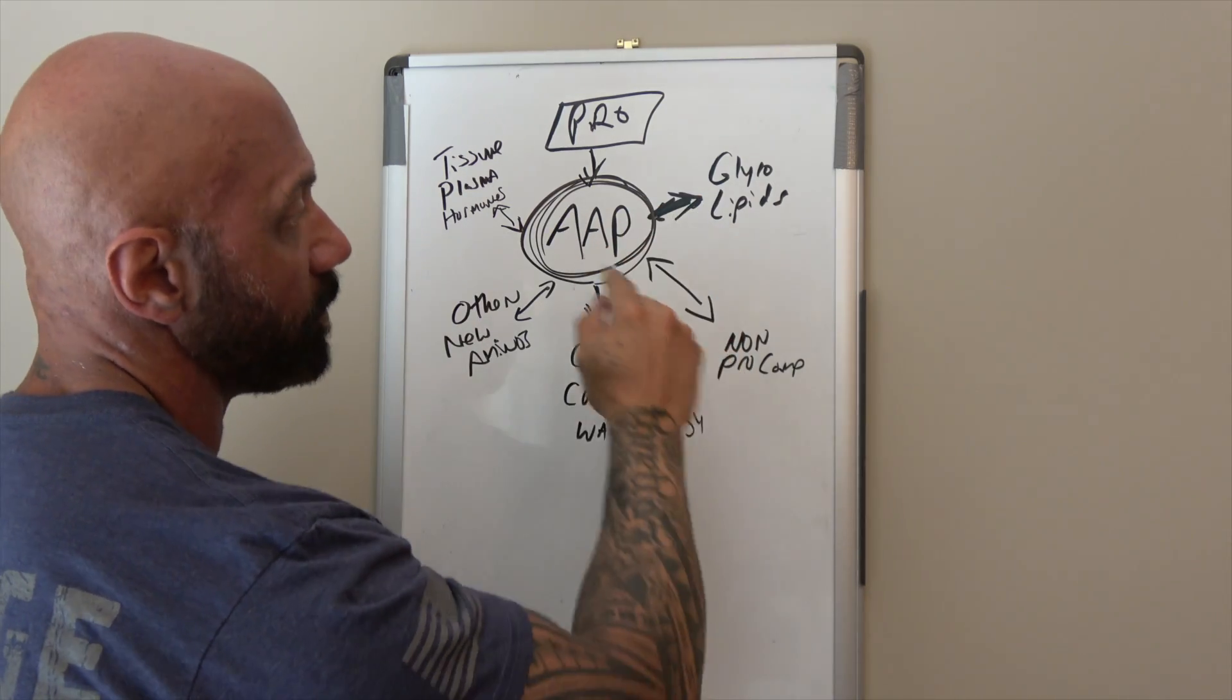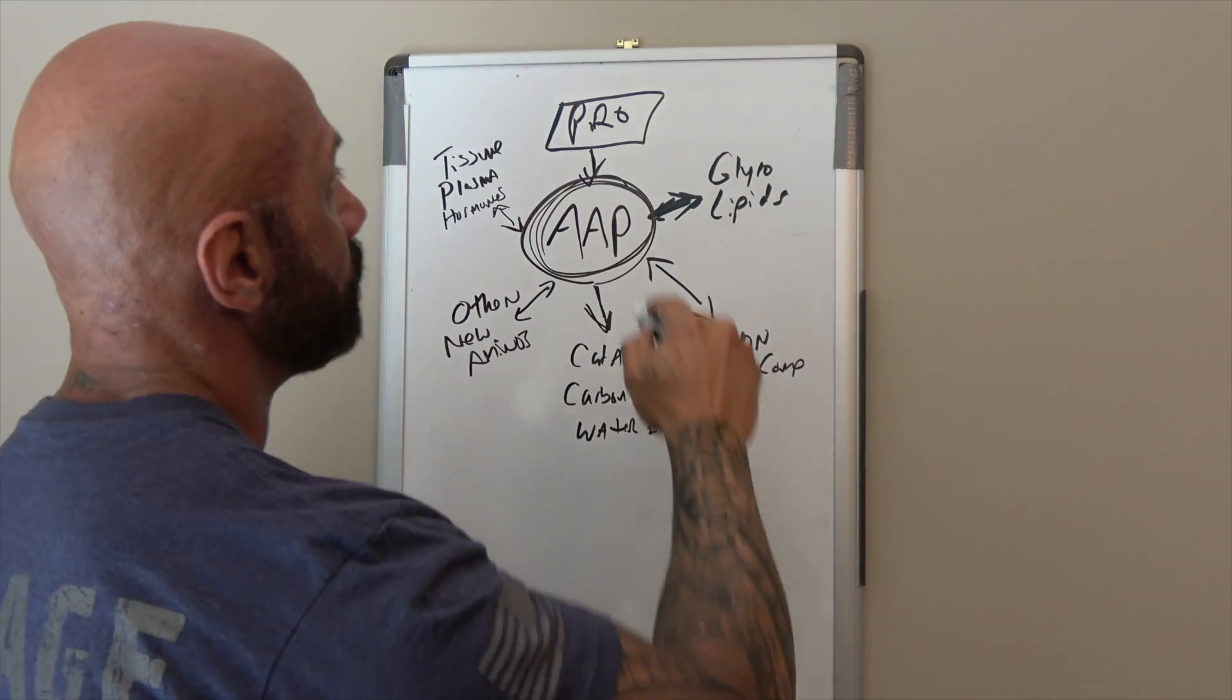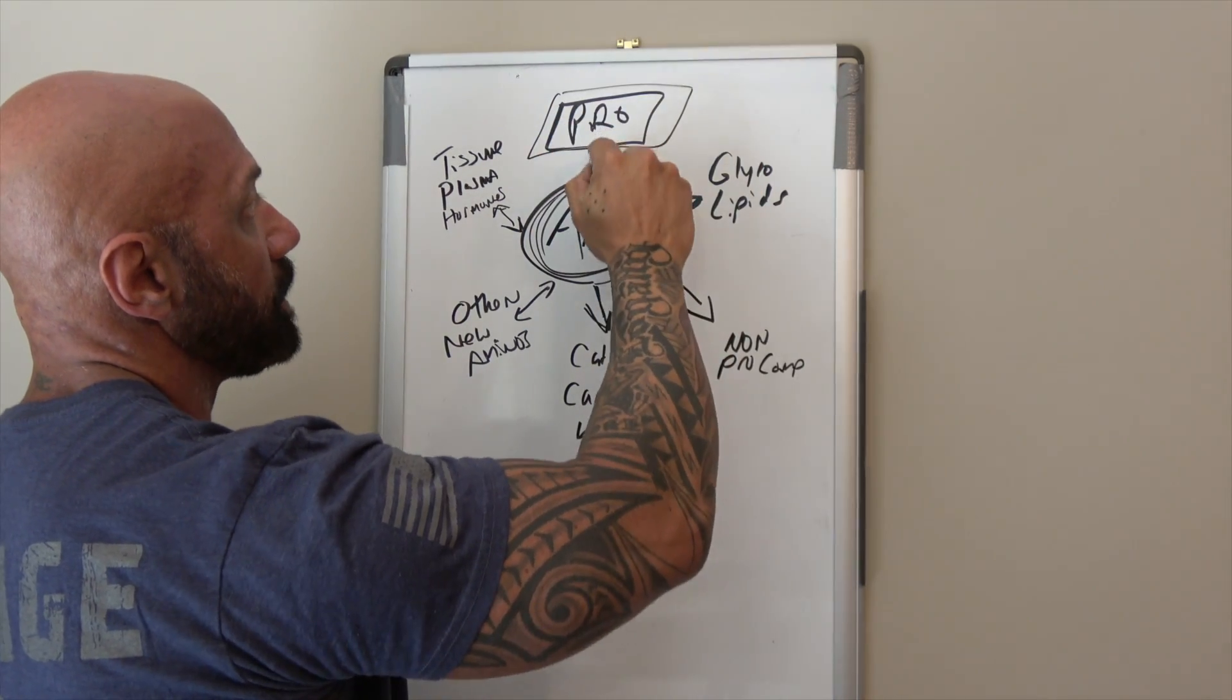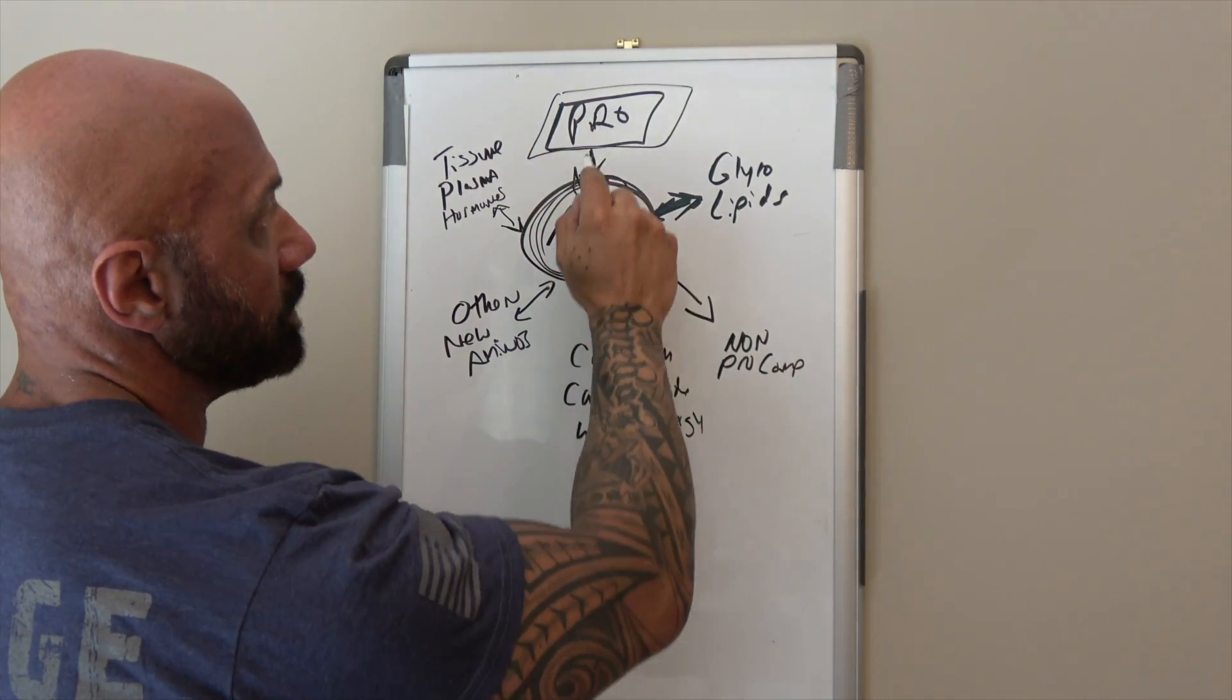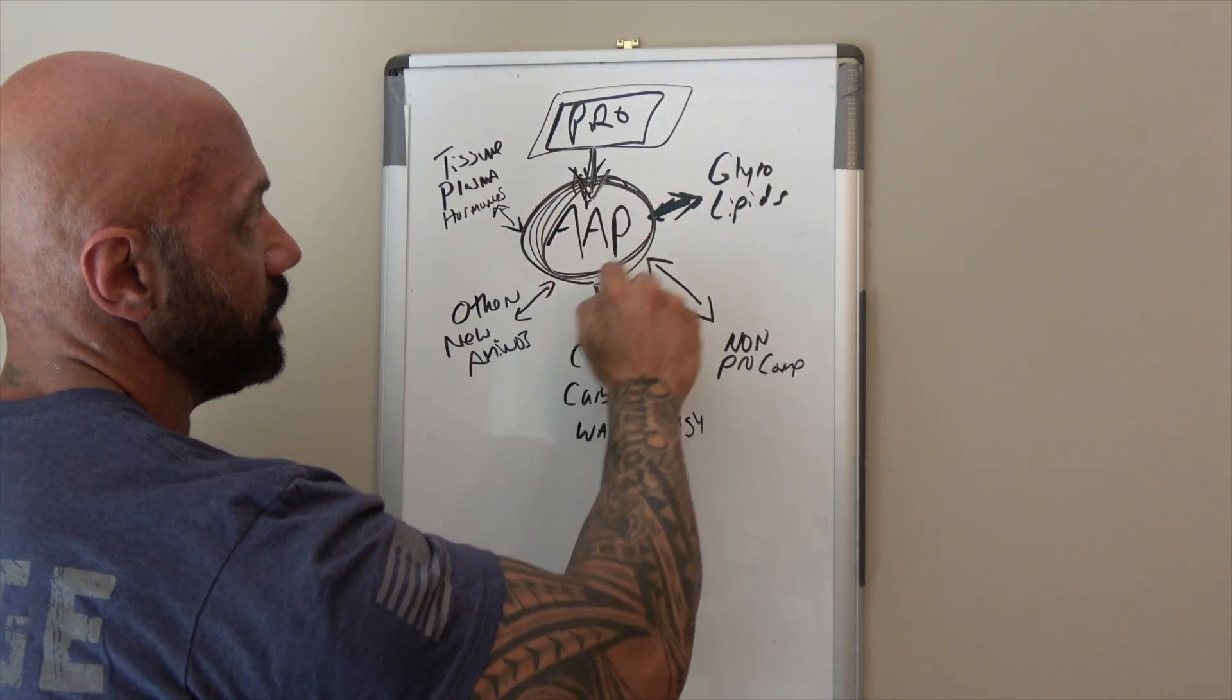You'll notice that certain things have arrows going only in, some things have arrows only going out, and some of them go in and out together. Protein becomes amino acids—aminos don't become protein—so this arrow only goes down into the amino acid pool. Once protein's broken down, it's broken down into amino acids.